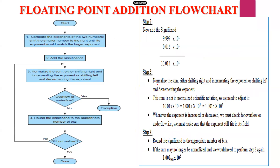Step 2: add the significands. So 9.999 × 10^1 plus 0.016 × 10^1. Both exponents are equal. Adding: 9 + 6 = 15, carry 1; 9 + 1 + 1 = 11, carry 1; 9 + 1 = 10, carry 1; 9 + 1 = 10. Result is 10.015 × 10^1. Step 2 is complete.